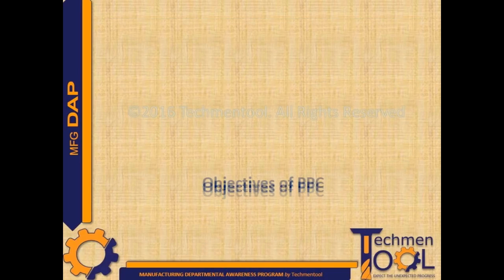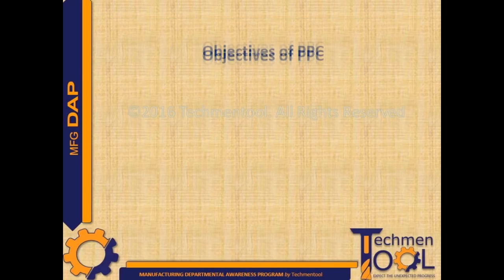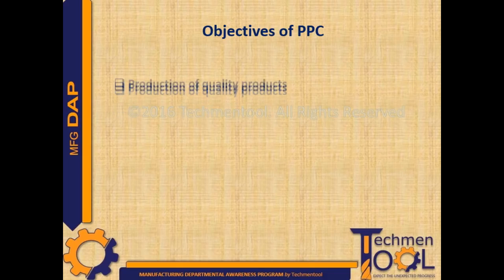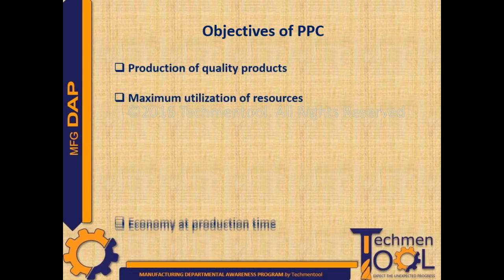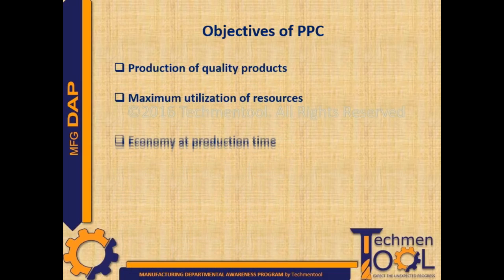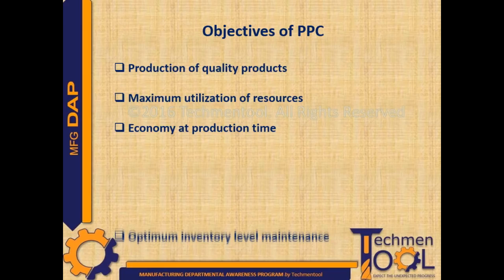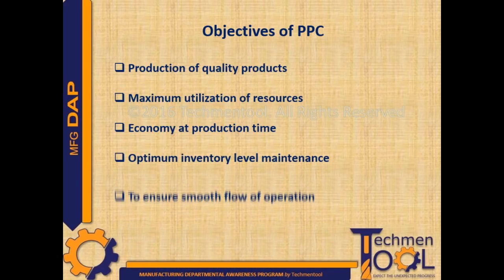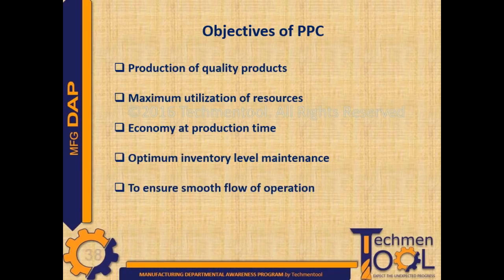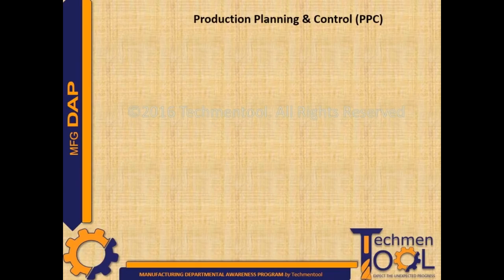Some objectives of the PPC department include: production of quality products, maximum utilization of resources, economy at production time, and optimum inventory level maintenance to ensure smooth flow of operations.